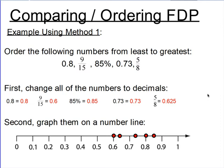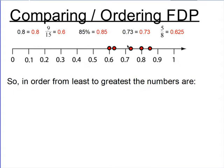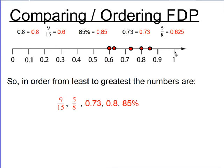We have all of our numbers on the number line, and we actually just put them in order by doing that — you can read from left to right or right to left depending on whether you're doing least to greatest or greatest to least. In order from least to greatest: the first mark represented six tenths, which is nine fifteenths. The second dot represented five eighths, or six hundred twenty-five thousandths. The third dot was seventy-three hundredths. The fourth dot was eight tenths. And eighty-five percent, or eighty-five hundredths, was farthest to the right.